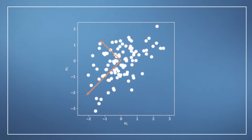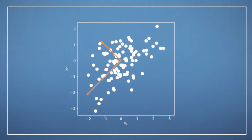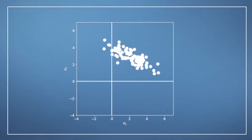When we look at the principal subspace of this normalized data set, we can now see that there is actually quite a strong correlation between these two dimensions, and the principal axes have changed. But now let's go through PCA step by step, and we'll have a running example.